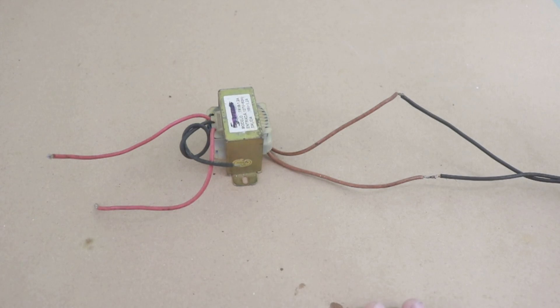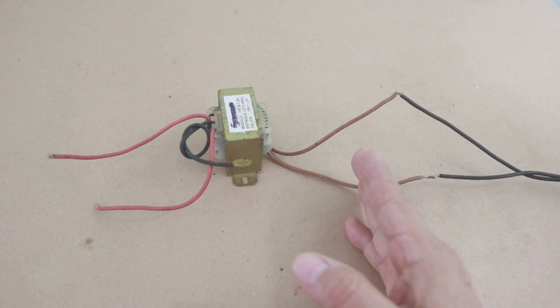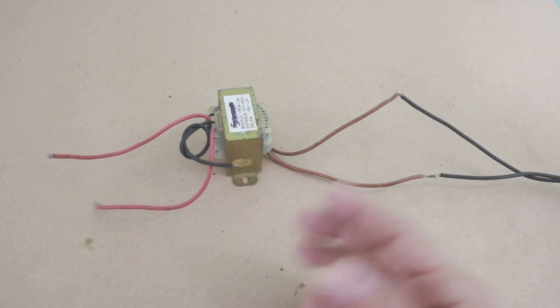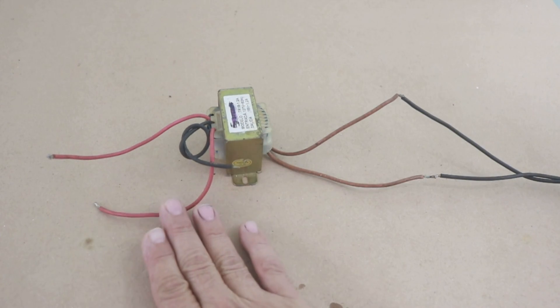So here is our transformer. This side is the primary and this is the secondary. This transformer has a center tab so let's ignore it for the purposes of this explanation. So primary and secondary.